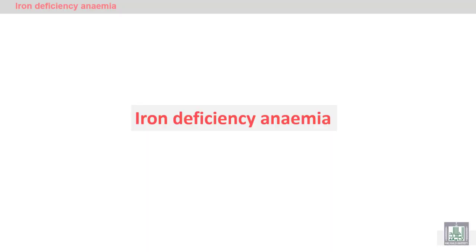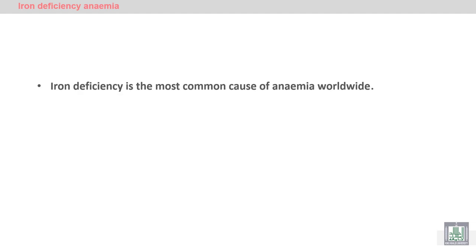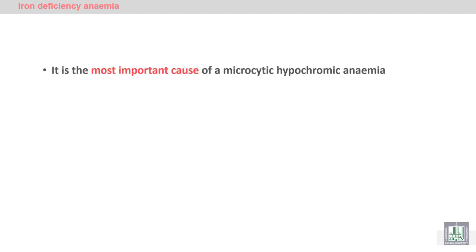Iron deficiency anemia is the most common cause of anemia globally, and it is the most important cause of microcytic hypochromic anemia. Microcytic refers to small red blood cells, and hypochromic refers to decreased hemoglobinization inside the red blood cells.